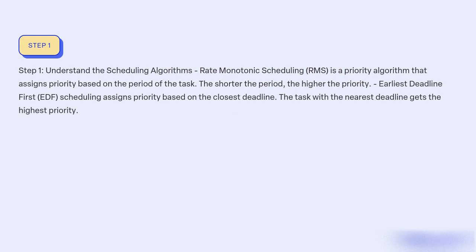Step 1: Understand the scheduling algorithms. Rate Monotonic Scheduling (RMS) is a priority algorithm that assigns priority based on the period of the task — the shorter the period, the higher the priority. Earliest Deadline First (EDF) scheduling assigns priority based on the closest deadline; the task with the nearest deadline gets the highest priority.